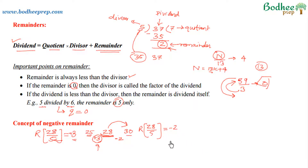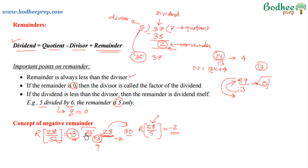The concept of negative remainder is this: in the earlier case there is an excess portion so we take it as positive. In this case there is a deficiency of 2 to make the number a multiple of 5, so we call it a negative remainder. Both have the same meaning — the only difference is the comparison. In the first case the comparison is done with the multiple of 5 just less than 28; in the latter case with the multiple of 5 just greater than 28. A positive remainder can be converted to a negative remainder and vice versa.